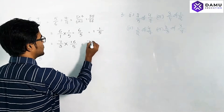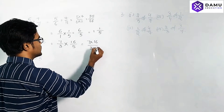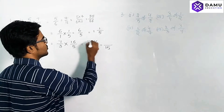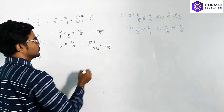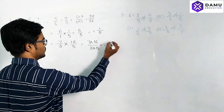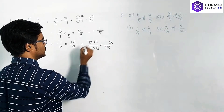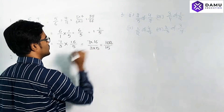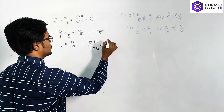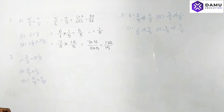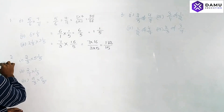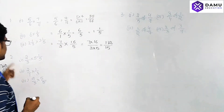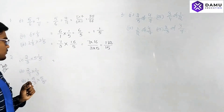We simply need to multiply numerators and denominators as they are — there is no possibility to simplify with any values. So 7 times 16 is 112, and 3 times 5 is 15 — the answer is 112/15.